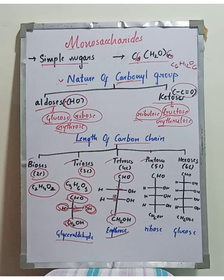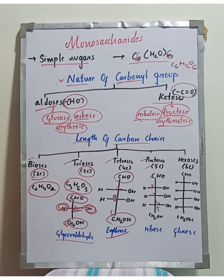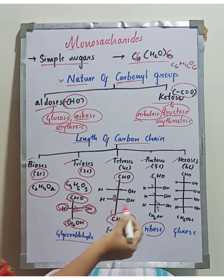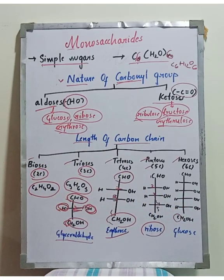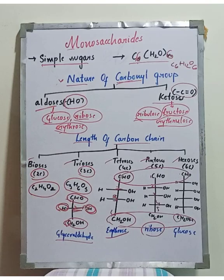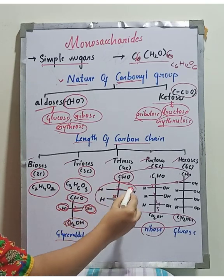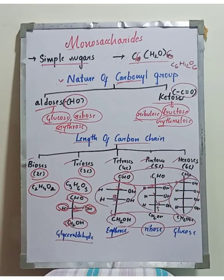Hexoses have 6 carbons, numbered 1 through 6. They follow the same general structural pattern with CHO at one end and CH2OH at the other. This completes the classification of monosaccharides.